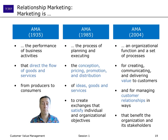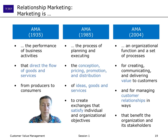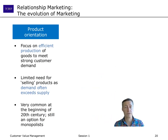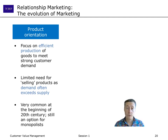A question you can ask is: why and how did marketing evolve — from something being logistics, to something about creating satisfaction using the four P's, to something related to creating value through customer relationship management? The reason marketing evolved this way is because firms themselves evolved. In 1935, many firms were essentially monopolists.